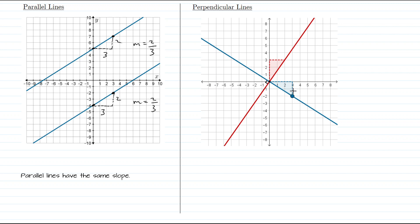Notice that our rise became our run and our run became our rise, and we switched the sign for our slope as well. So our original slope of negative two-thirds became a slope of positive three-halves for our perpendicular line. Therefore, we can say that perpendicular lines have slopes that are negative reciprocals of each other. And that's it.